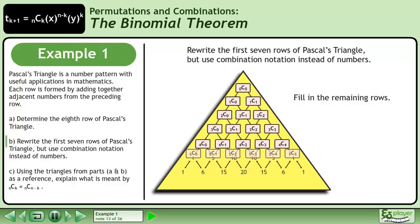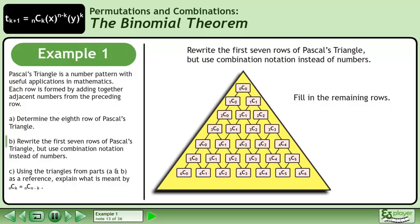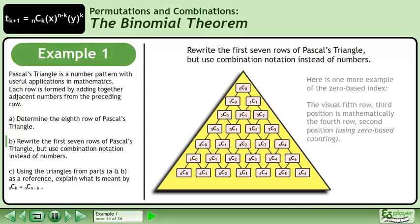Fill in the remaining rows. Here is one more example of the zero-based index. The visual fifth row third position is mathematically the fourth row second position using zero-based counting.